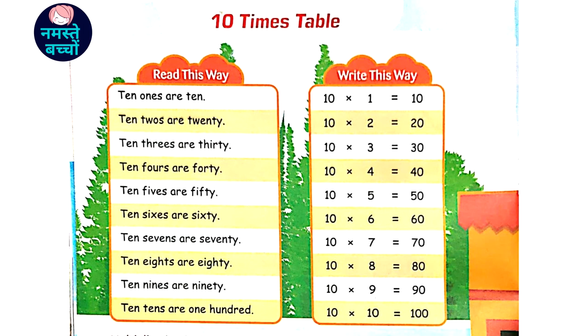10 3's are 30, 10 4's are 40, 10 5's are 50.